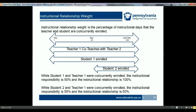Instructional relationship weight is the percentage of instructional days that the teacher and student are concurrently enrolled. If two teachers co-teach a student enrolled from start to finish, the student is in the course 100% of the time with each teacher. There should be two staff-student subtest records uploaded: one for teacher 1 with an instructional responsibility of 50% and an instructional relationship of 100%, and one for teacher 2 with an instructional responsibility of 50% and an instructional relationship of 100%. If a student is not enrolled for 100% of the course, the instructional relationship weight should reflect the percentage of time the student was enrolled.